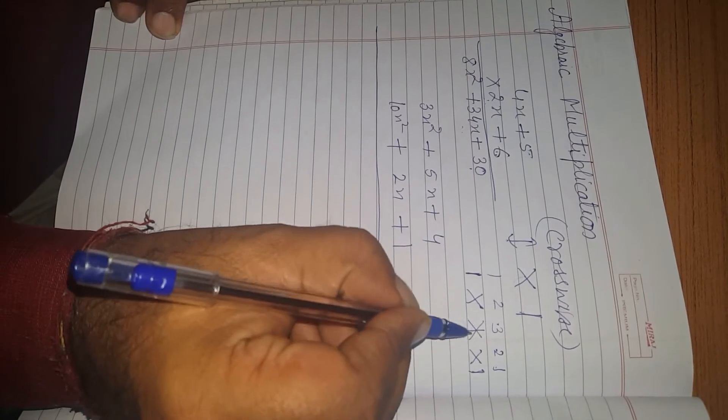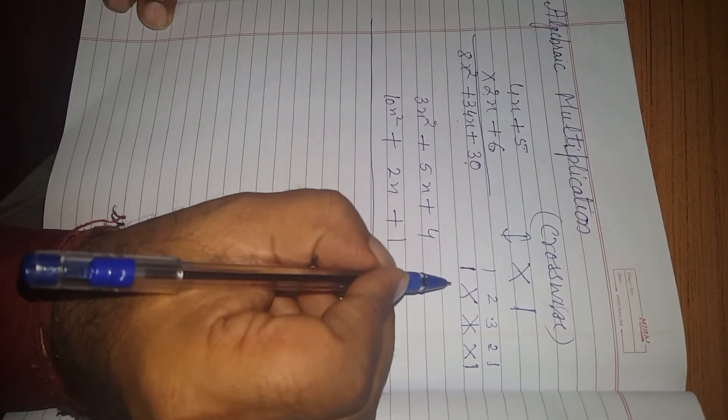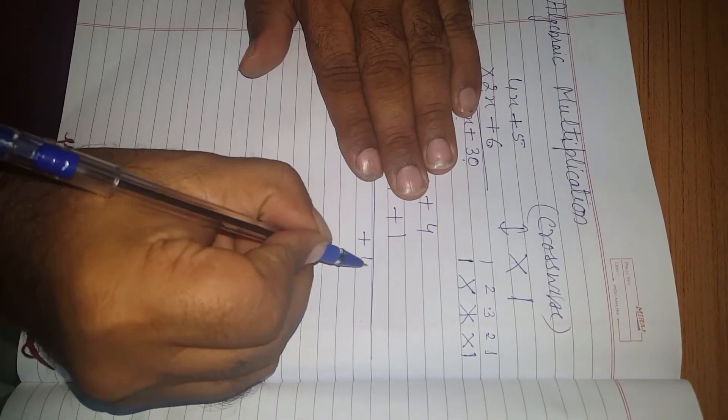The formula is Vertical, Cross, Cross and Vertical, Cross, and vertical. First step is same. Vertical multiplication. You will get 4 times 1, which is 4.